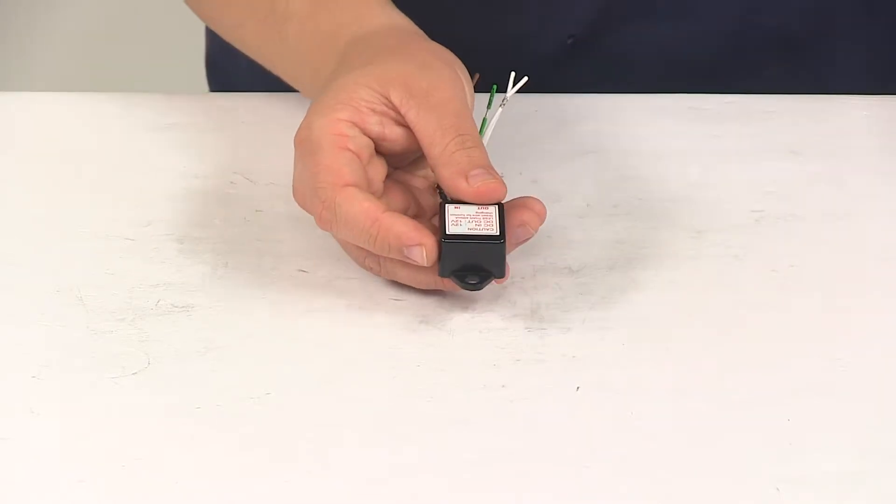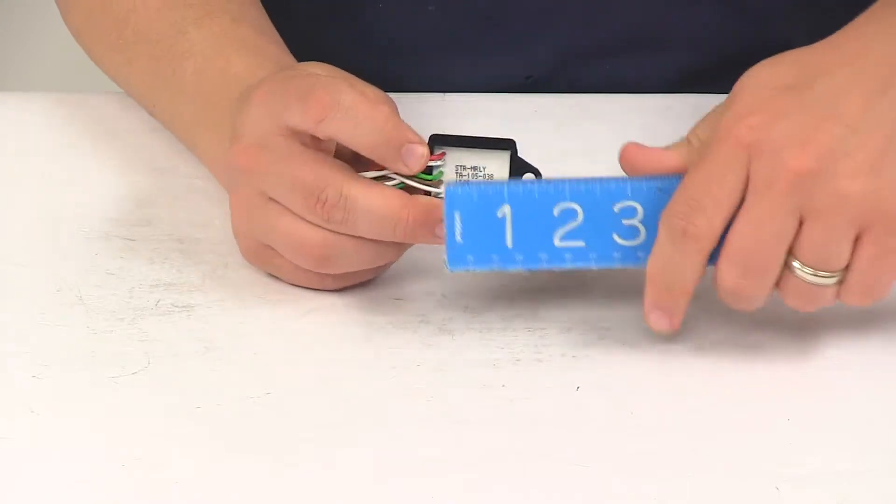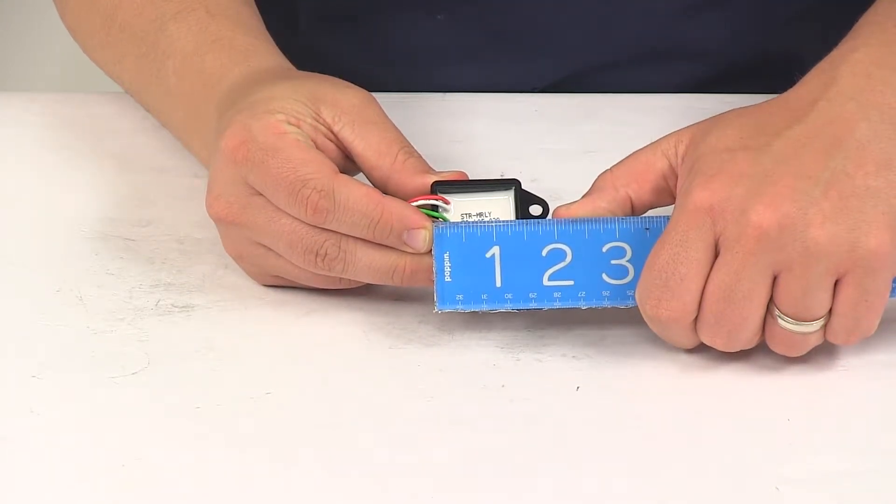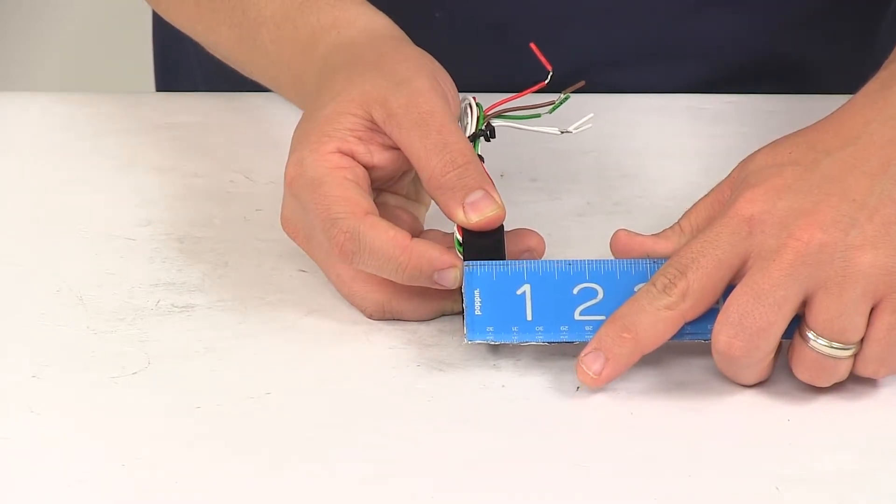When it comes to the dimensions of the box, edge-to-edge this direction is about 1 1/8 of an inch. Measuring back to front, including the mounting tab here, is about 2 inches long. And then the overall height is only about 3/4 of an inch tall.